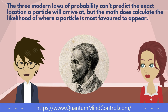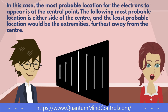The three modern laws of probability can't predict the exact location a particle will arrive at, but the math does calculate the likelihood of where a particle is most favored to appear. In this case, the most probable location for the electrons to appear is at the central point. The following most probable location is either side of the center, and the least probable location would be the extremities, furthest away from the center.